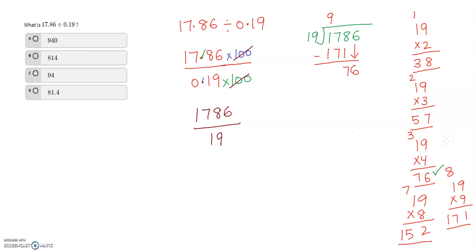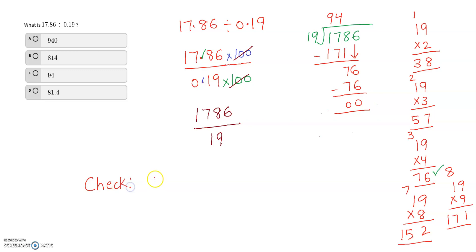I can see that 19 times 4 gives 76, so I write 4 in the quotient and subtract, giving remainder 0. To double-check, you can verify by multiplying 19 with 94, which should give you 1786.